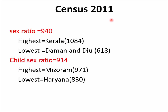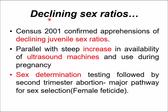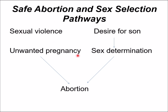According to Census 2011, the sex ratio in India is 940 and the child sex ratio is 914, indicating a declining sex ratio. Factors responsible include sexual violence, unwanted pregnancy, and desire for a son, which drive sex determination practices and ultimately contribute to abortion.